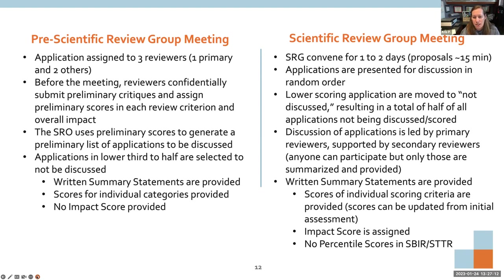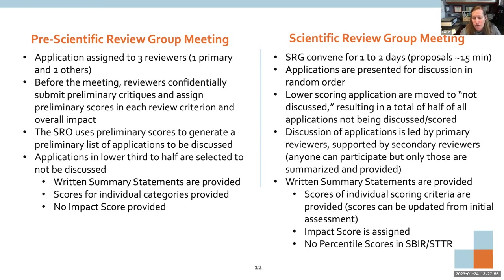The SRO then takes the remaining applications whose scores made the cut and puts them in a random order for discussion. It's typically a one- to two-day meeting, and each proposal is discussed for about 15 minutes. There's still an opportunity at the live meeting for applications to be dropped if scores don't hold up — for example, if the secondary reviewer scored it very poorly and there's agreement to toss it. Discussion is led by the primary reviewer.